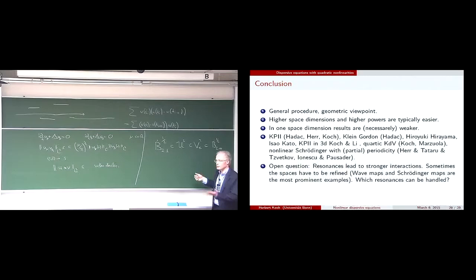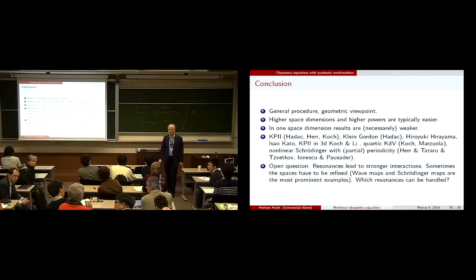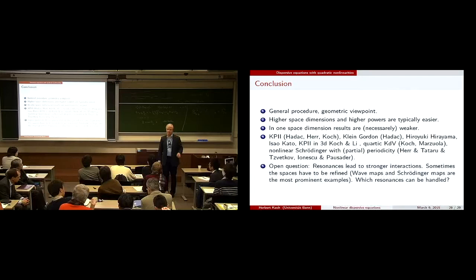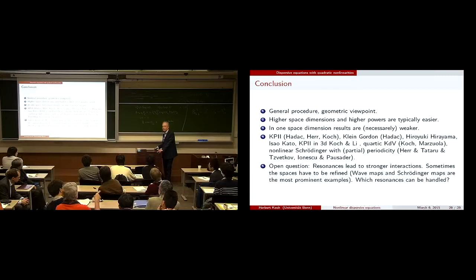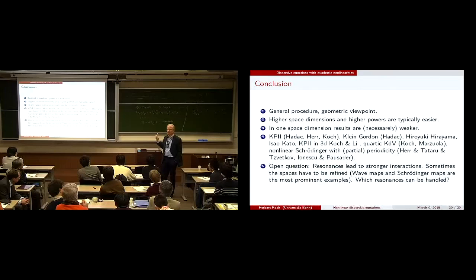There are problems where you can work with these spaces — the quarter-KdV equation is an example. But even then, if you work with these spaces, you have to handle many more cases in the estimates. Because U^p/V^p is much closer to duality, all terms play roughly the same role. Tataru was able to get solutions for the quarter-KdV equation in these spaces. But you do have to deal with much fewer terms if you take U^p.